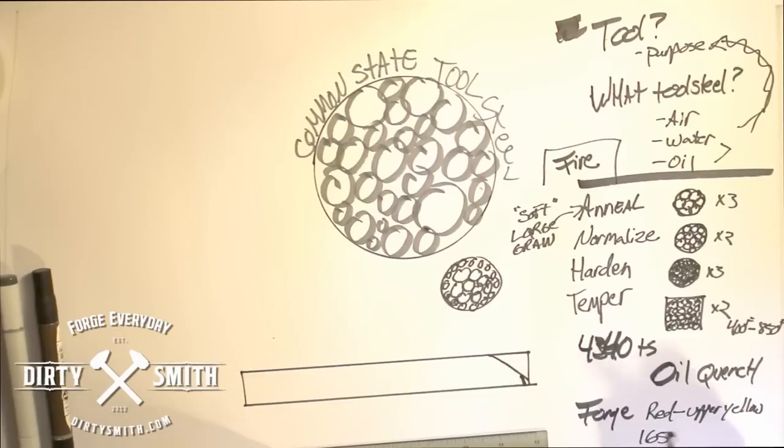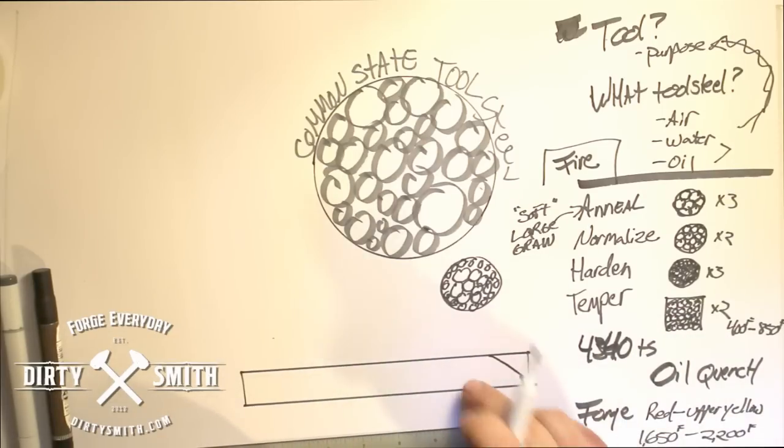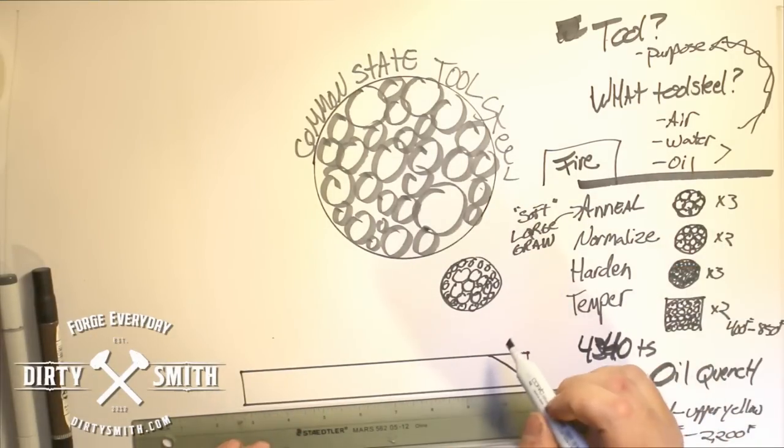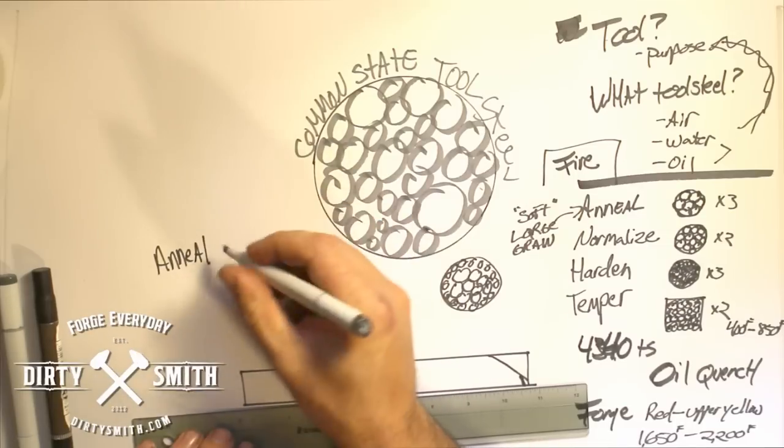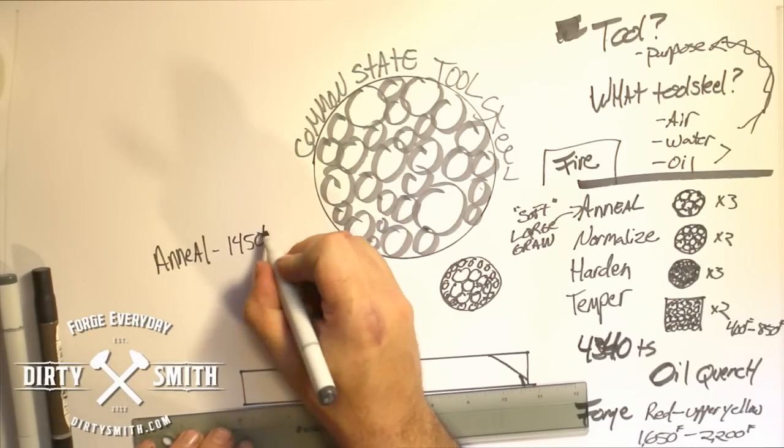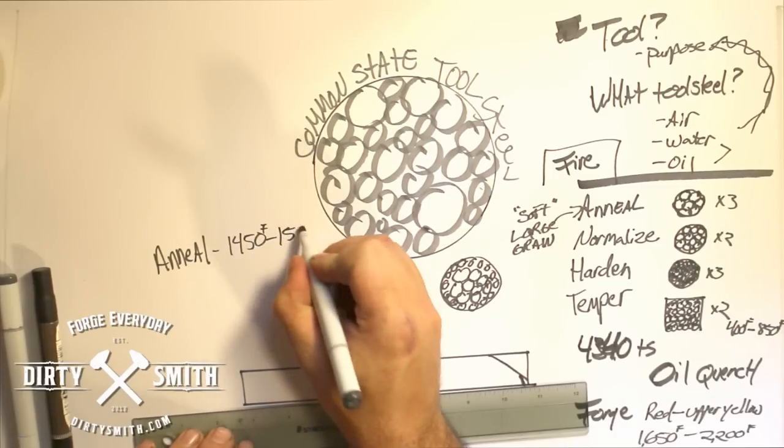From the reds to the upper yellows, we're talking 1650 to 2200. I typically stay in the low orange and yellows when I'm forging tool steels. I want to respect this as much as possible. It starts getting cold, put it back in the forge. First thing I would do is anneal this material. Anneal temperature, the literature says 1450 to 1550.